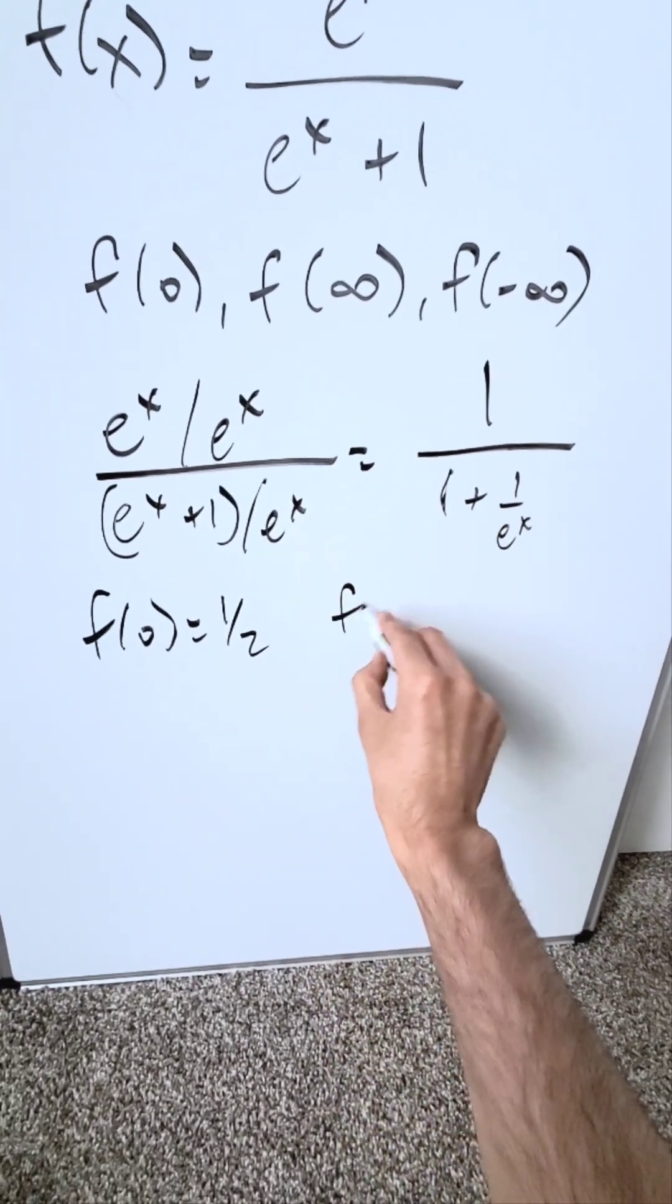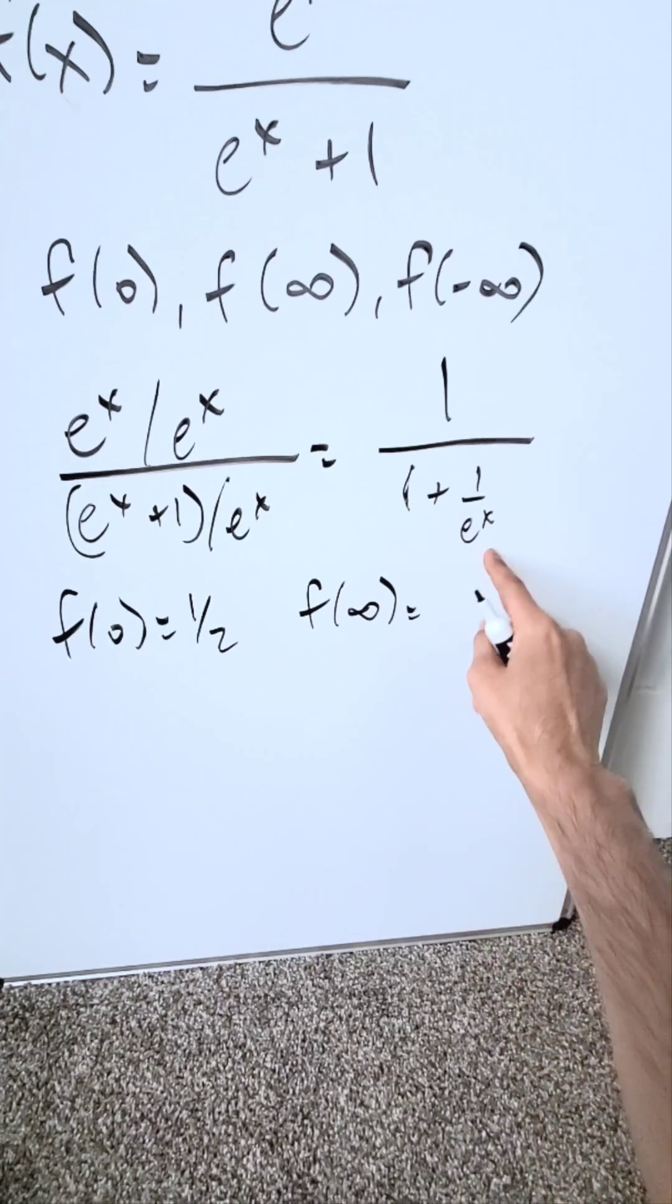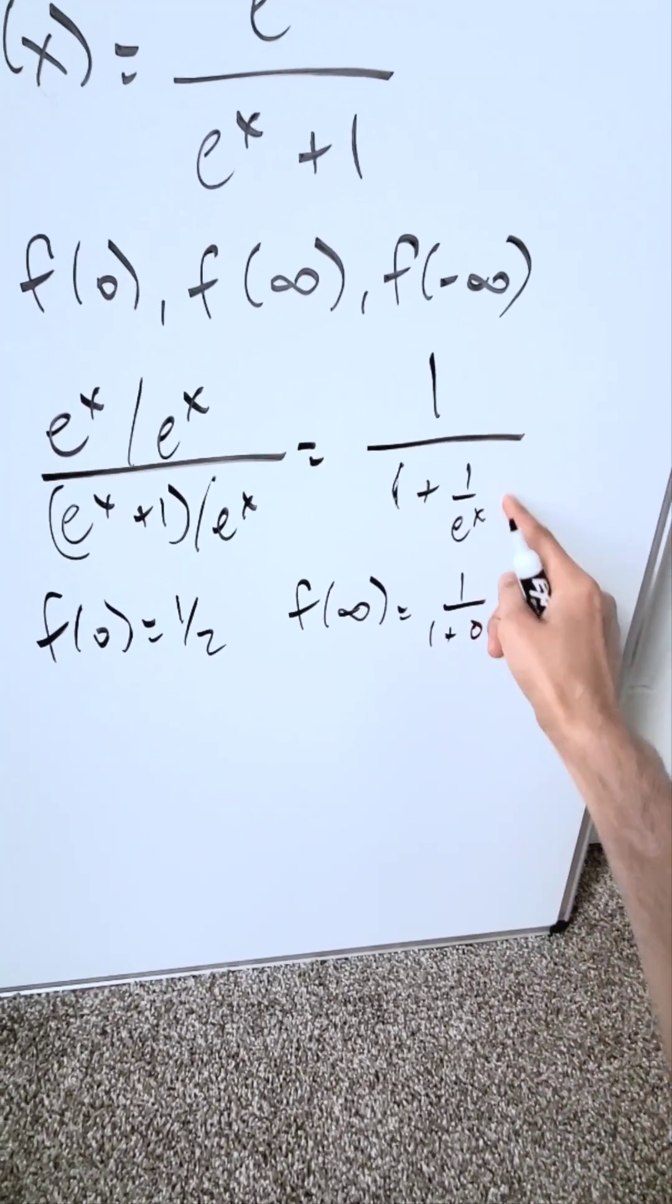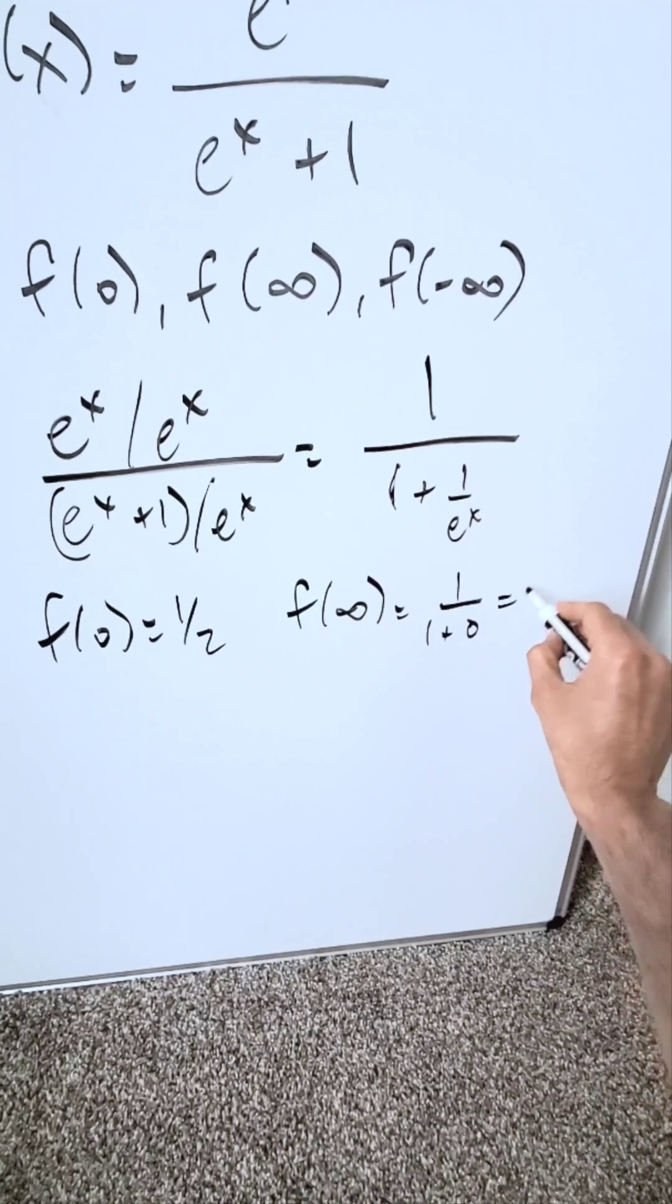If I do f of infinity, I'm putting infinity right here. I'll have 1 over 1 plus 0. 1 over infinity tends towards 0, and this is going to be 1.